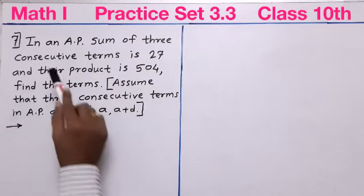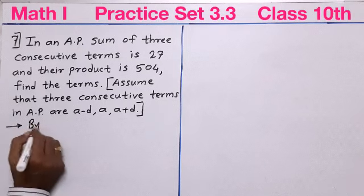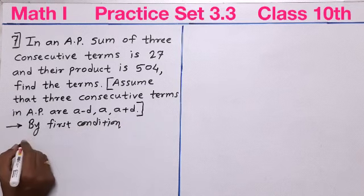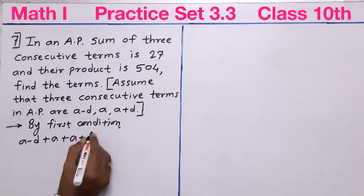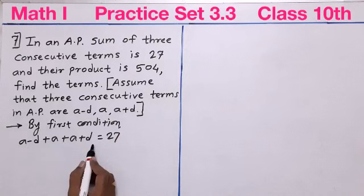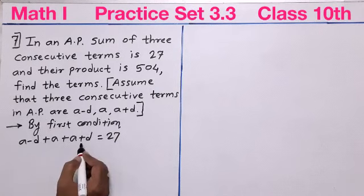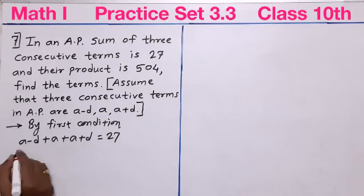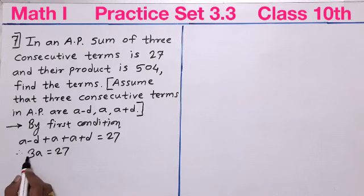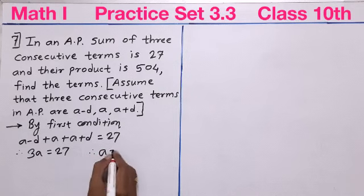By the first condition, the sum of the three consecutive terms is 27. So we write: (A minus D) + A + (A plus D) = 27. The negative D and positive D cancel out, leaving A + A + A, which is 3A. So 3A = 27, and dividing both sides by 3, we get A = 9.